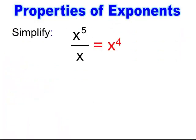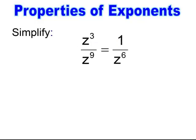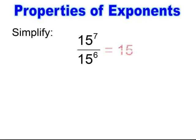You should have gotten x to the 4th — the higher exponent is on top, so you end up with the whole part, x to the 4th. The higher exponent is on the bottom, so I subtract and it stays on the bottom — I get 1 over z to the 6th. Again, it's like bases, so you use the division property, subtract exponents, and end up with 15 to the 1st power, which is 15.